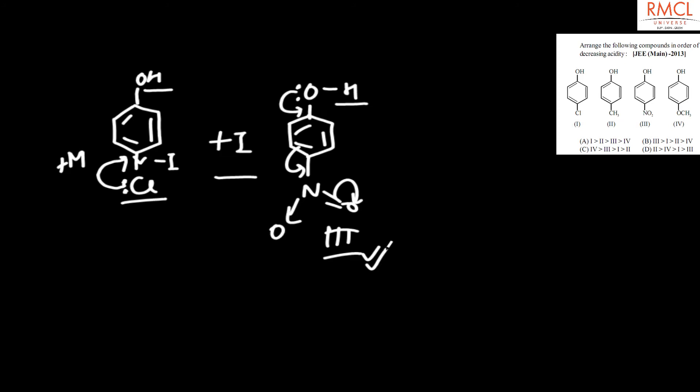Next is methoxy phenol. The oxygen atom has a lone pair, so it donates the lone pair of electrons to the benzene ring, which decreases the acidity. So the correct option for this question is: third is strongest, then first, then second, then fourth. Option B is the correct answer.